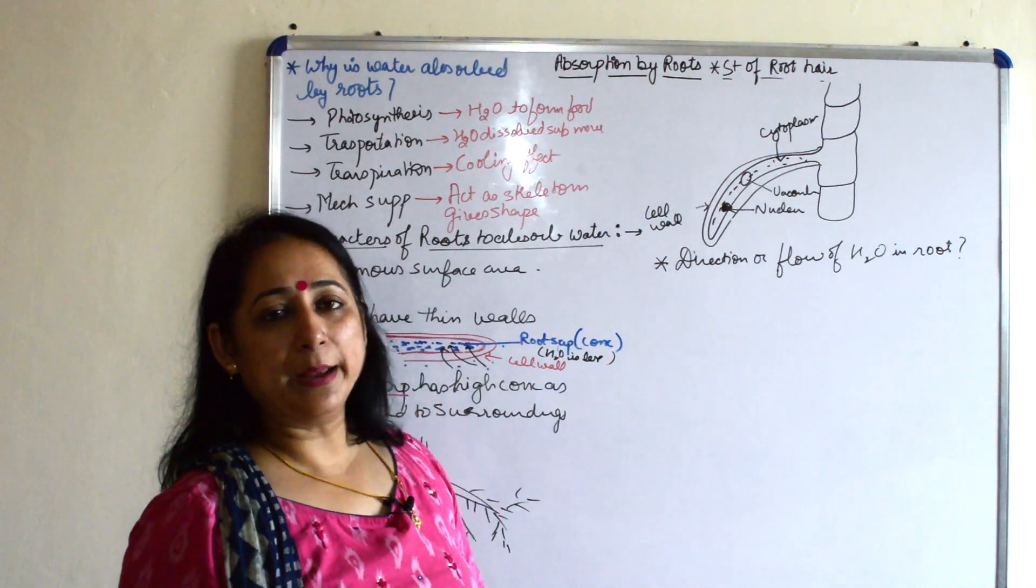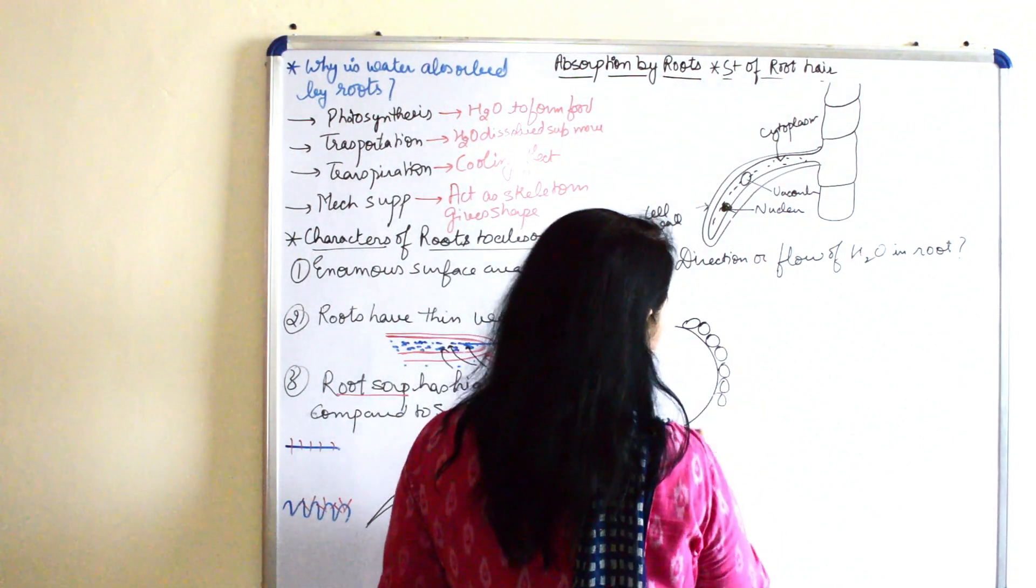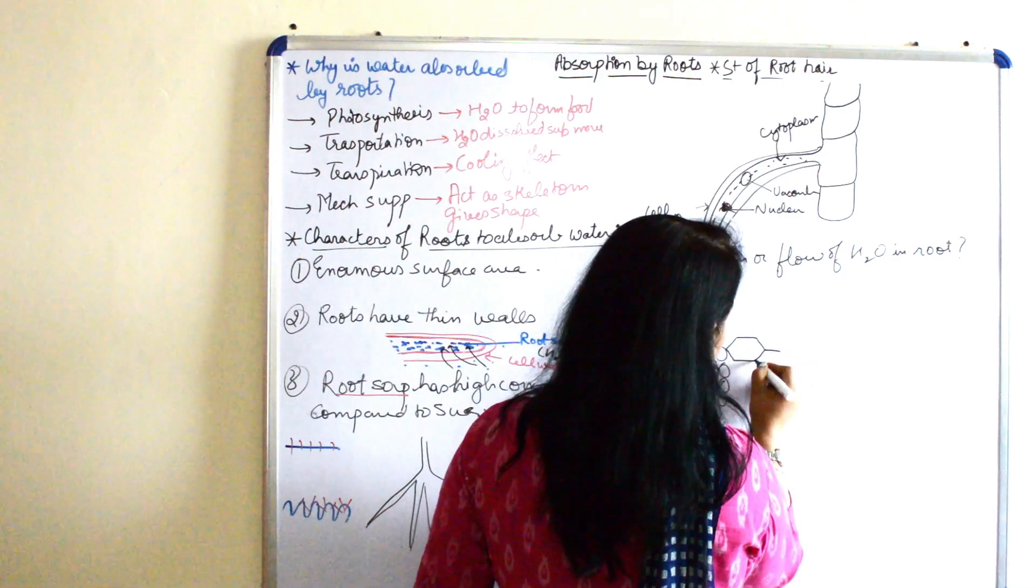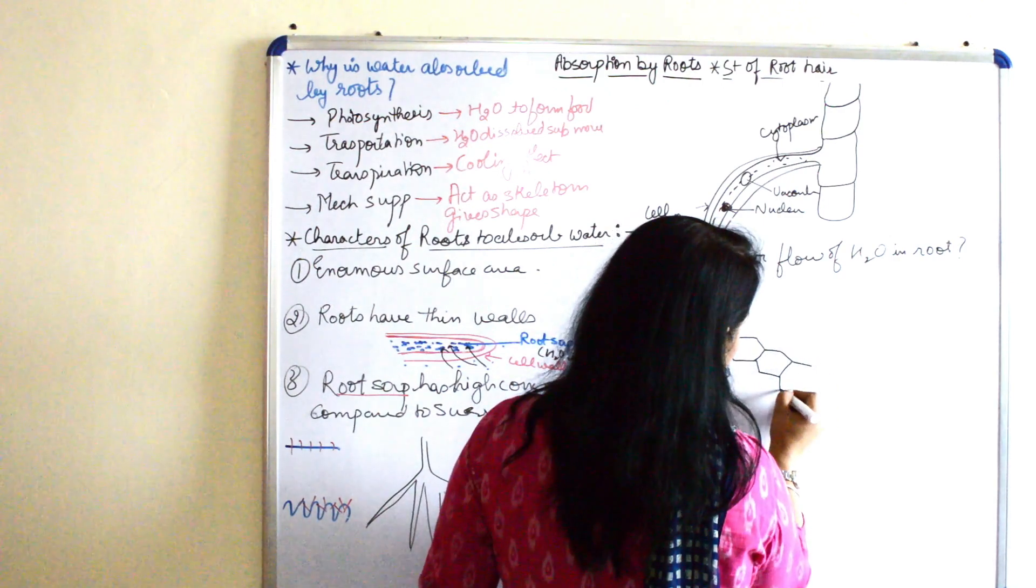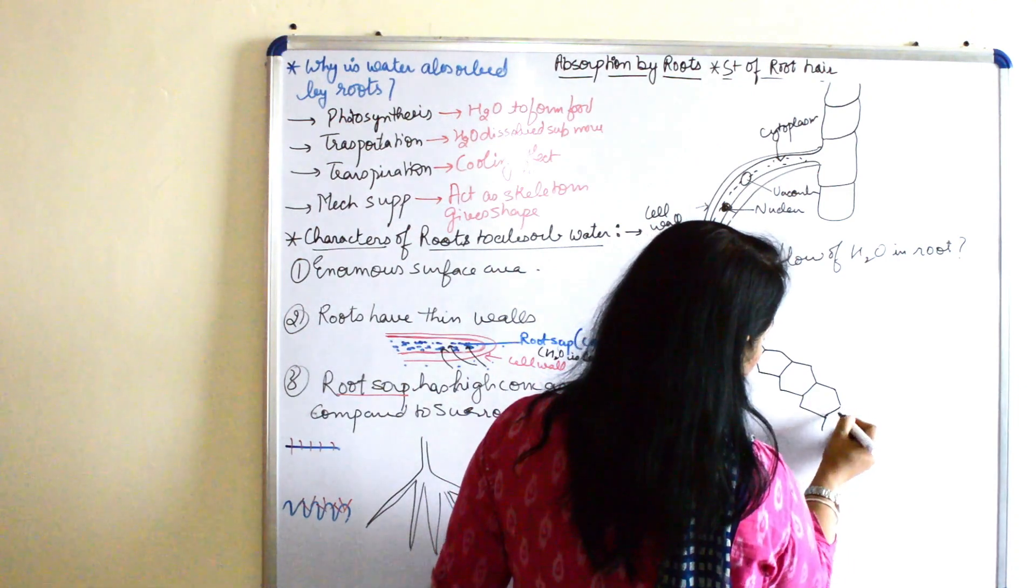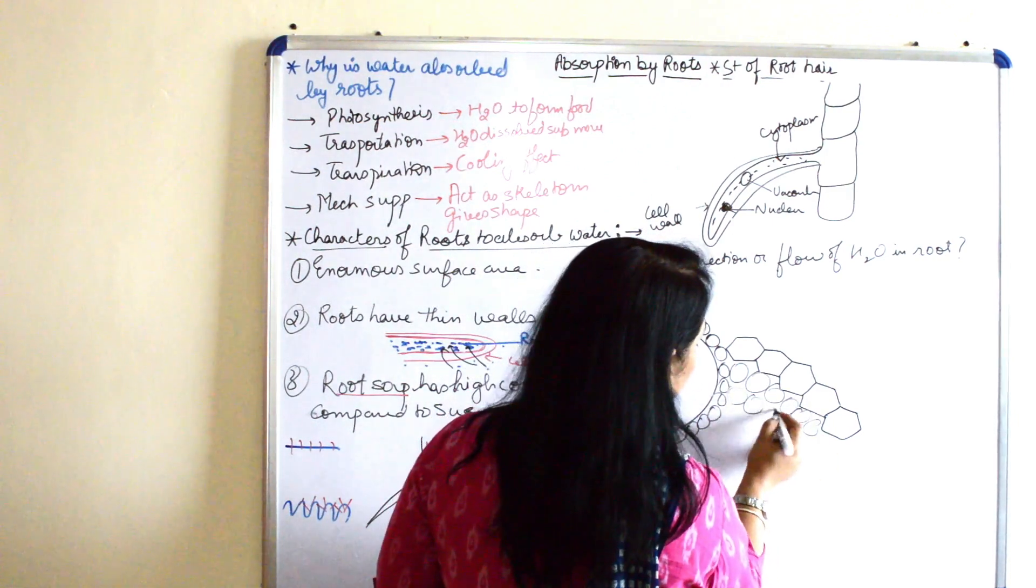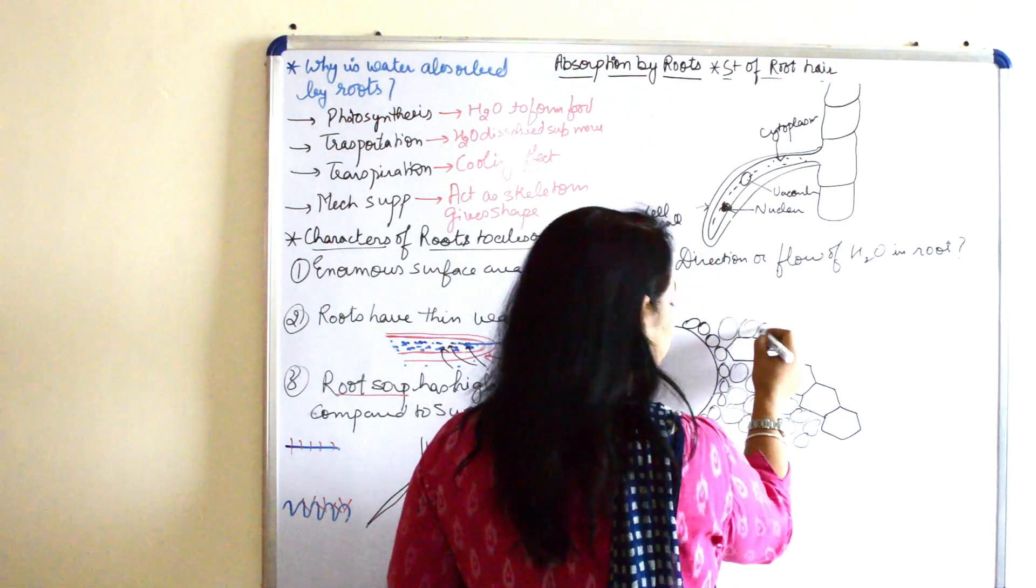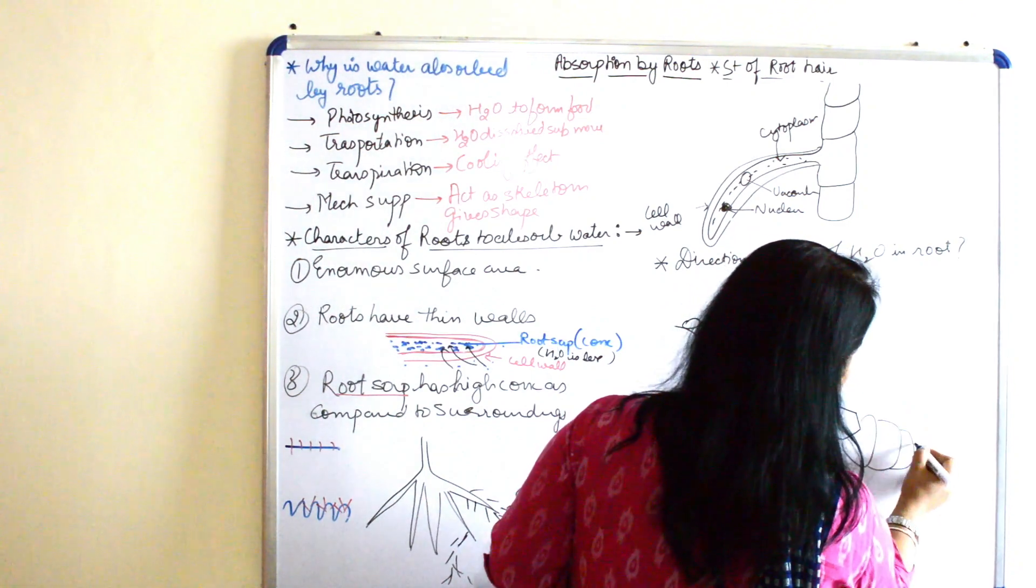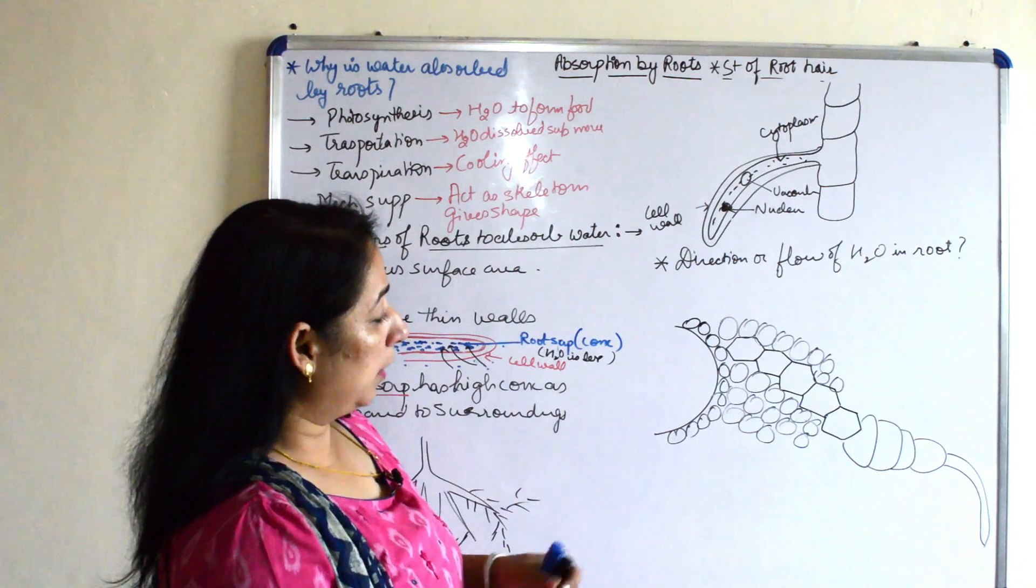Direction of flow of roots. I'll just make a rough diagram to explain you the movement, how the movement of the water molecule takes place. So if we say these diagonal structures which I am making, these are xylem cells. And inside we have phloem. As you know that it's a vascular bundle. In vascular bundle xylem and phloem are arranged.